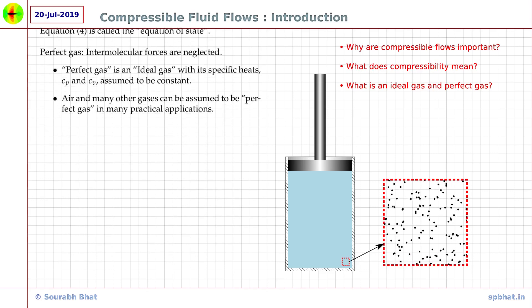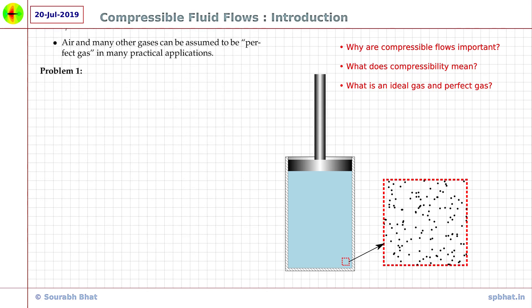Let us conclude this tutorial by solving a simple problem. Let us call it problem 1. Calculate the isothermal compressibility of air at 1 atm pressure. First, let us convert the pressure to SI units: 1 atm is equal to 101325 newton per meter square.